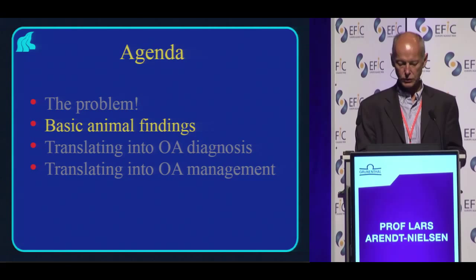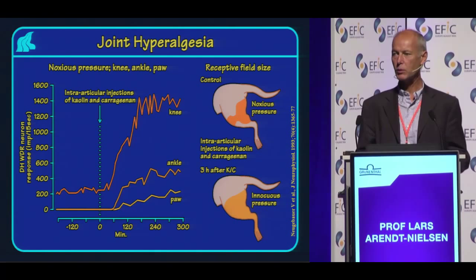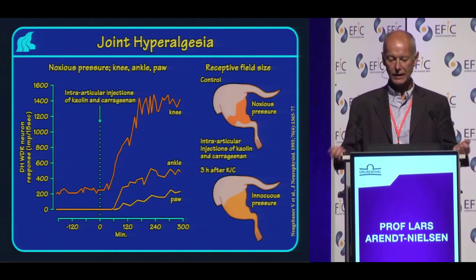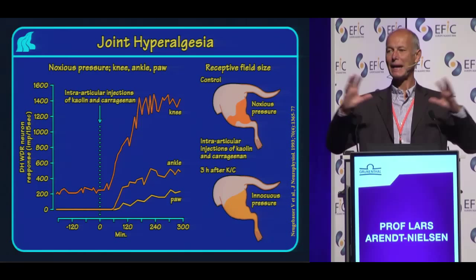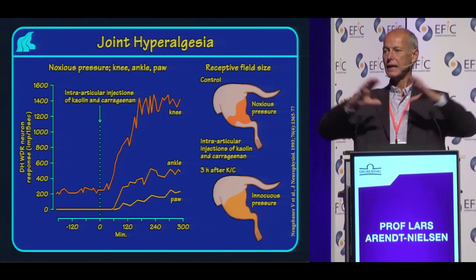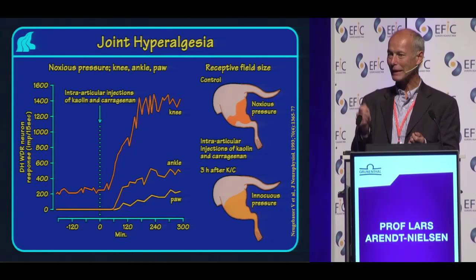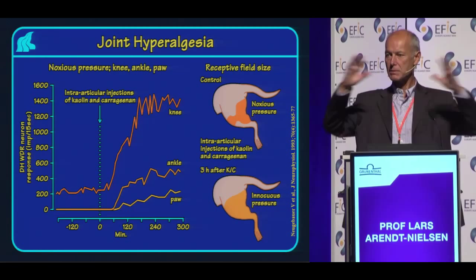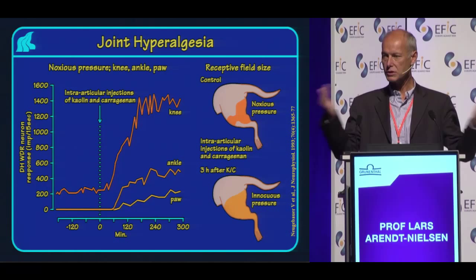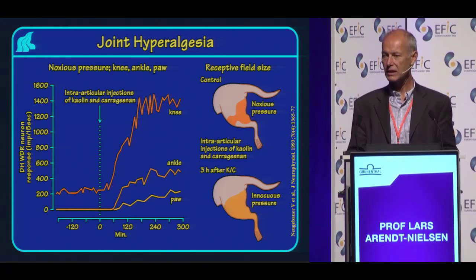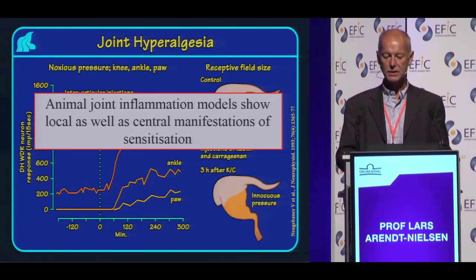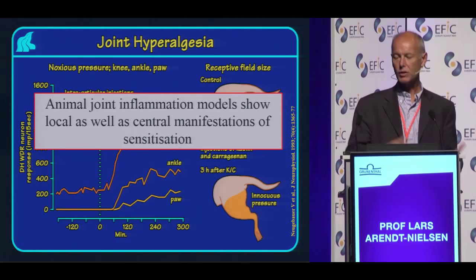Coming back to the preclinical data — what do we actually see in the animals when we talk about knee osteoarthritis? Here is just an example showing what happens if you have inflammation of a joint in an animal. You will see an expansion of the so-called receptive fields — the area from where you activate your spinal neurons. And on top of that, there will also be a sensitization, so you need to apply less stimulus to provoke nociceptive activity. You see an expansion, a lowering of threshold — these are consistent findings across many animal studies.